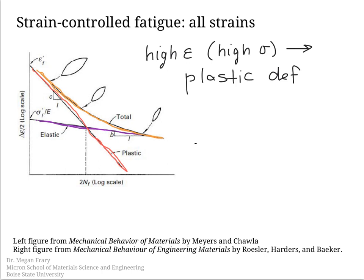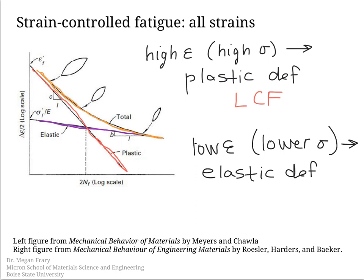On the other hand, at smaller strains and a higher number of cycles to failure, behavior follows more along the elastic strain line. This is the region we call high cycle fatigue, where stress is more controlling because only elastic deformation occurs.